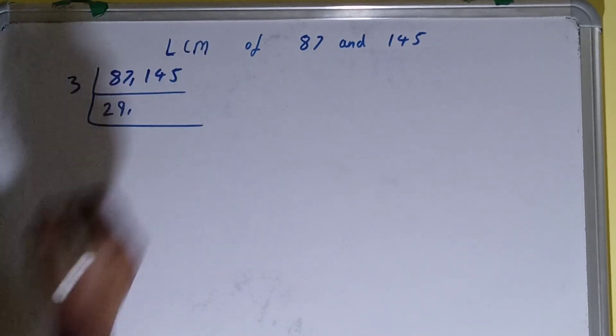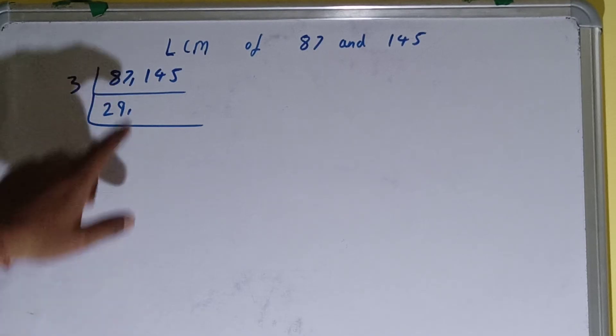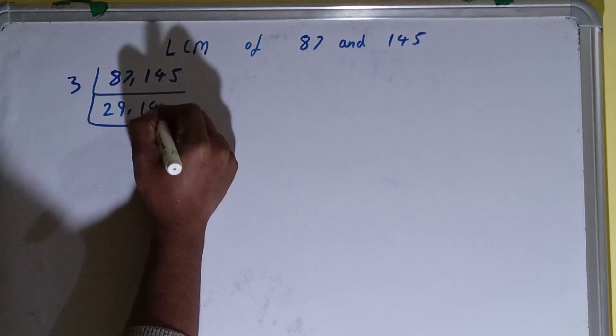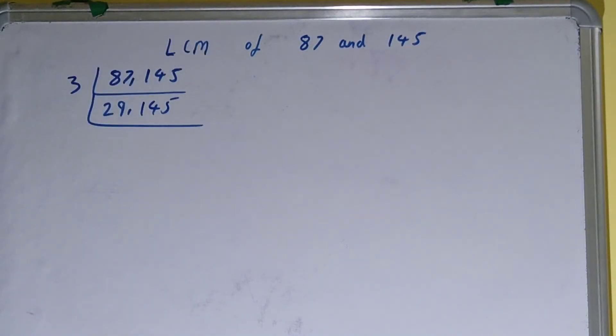And if we check this number, then this number is not divisible by 3, so we'll just copy it down. Again, we'll check if any of the number is divisible by 3, then none of the numbers.